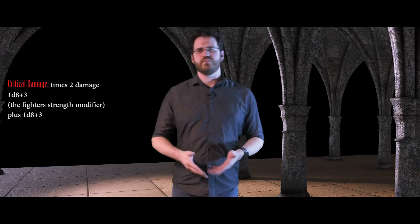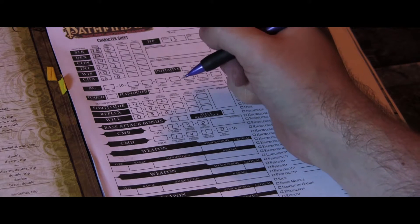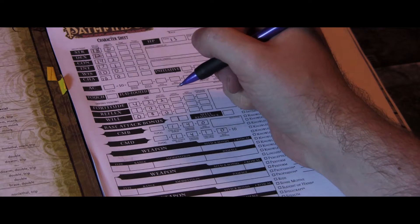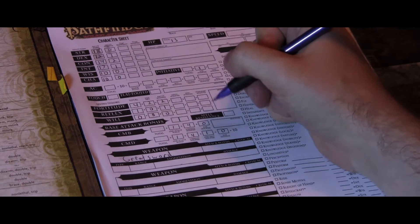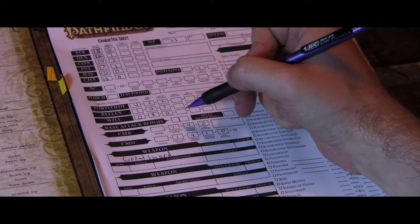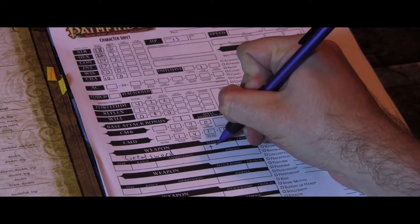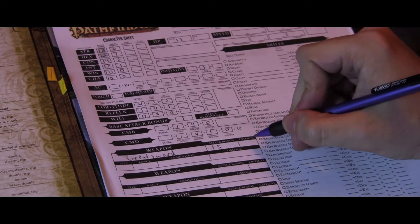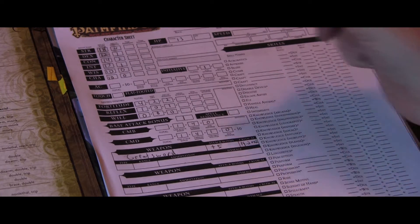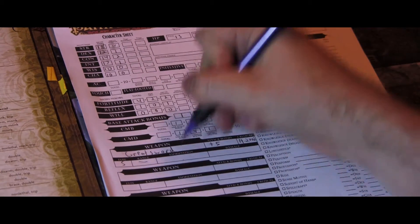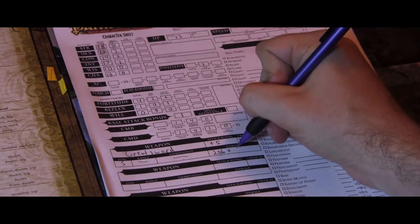With all that in mind, let's look at adding all of these bonuses to a character. Here we see Jordan making a new first level fighter character. He's already assigned his stats and is now moving on to his weapons. Jordan has chosen to go with the greatsword. First, write down the name of your weapon. Jordan is a first level fighter, so he has a base attack bonus of 1, and an 18 strength giving him a plus 4 bonus. As a human medium-sized creature, he has no size modifier, for a total of plus 5. The critical range for his weapon is 19 to 20 times 2. The damage type is slashing, and being a melee weapon there is no range or ammunition needed. The weapon does 2d6 damage, and as it is a two-handed weapon, he adds 1.5 times his strength modifier.